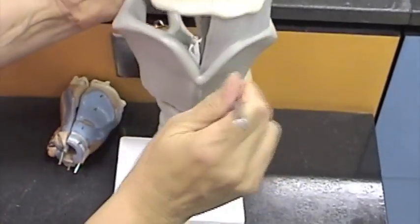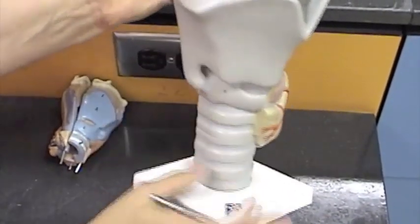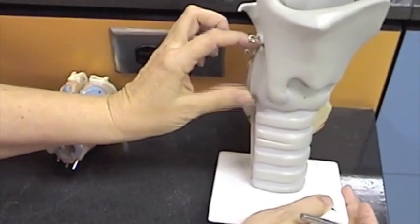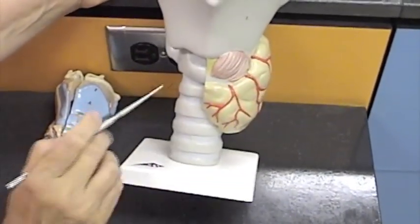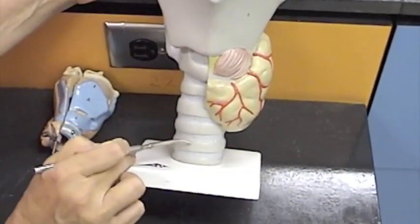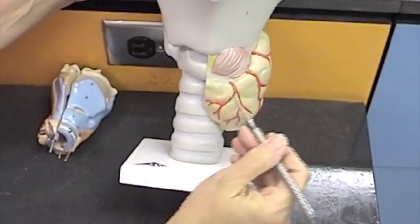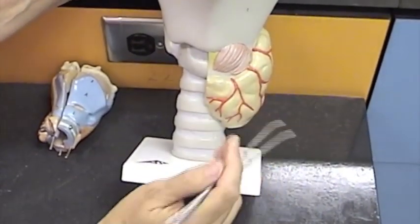So here's the big thyroid cartilage. Here's the cricoid cartilage that is actually bigger posteriorly. Then we have the tracheal cartilage rings here. Here's the thyroid gland, or at least half of it.